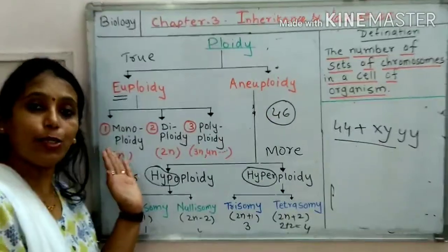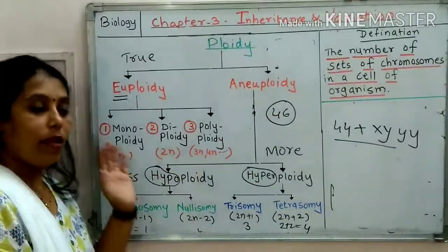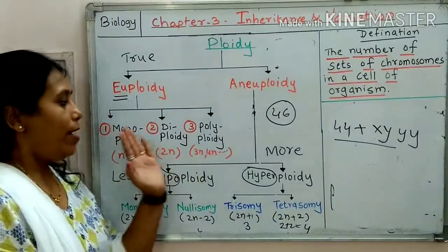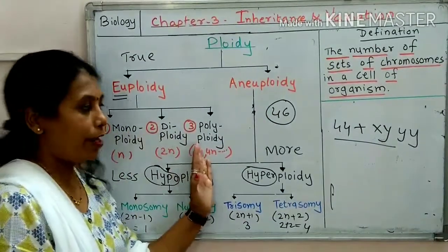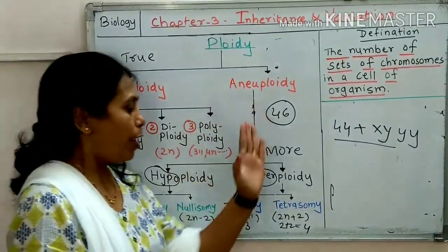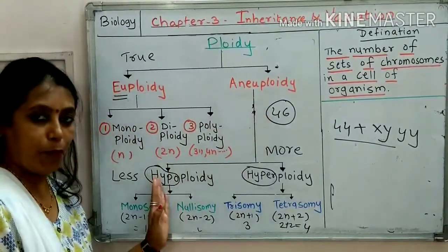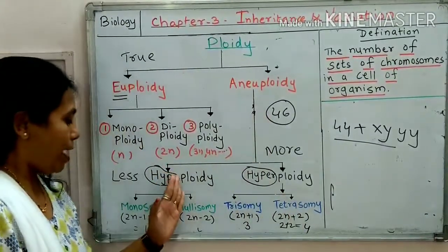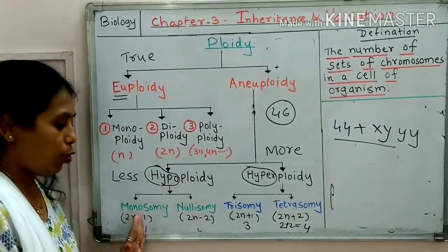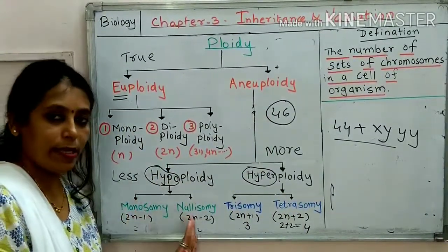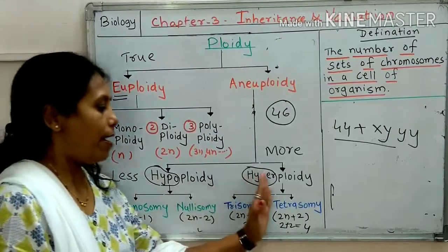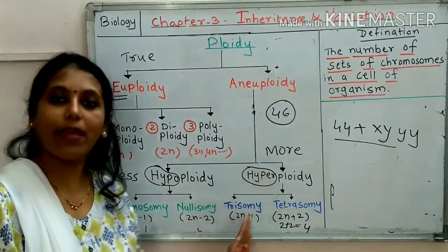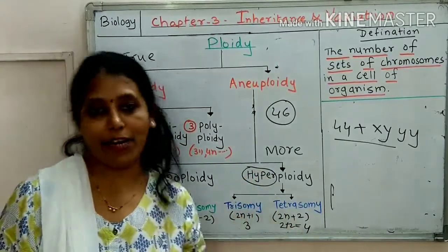Euploidy divides into 3 parts: monoploidy, diploidy, and polyploidy. Aneuploidy divides into hypoploidy and hyperploidy. Hypoploidy includes monosomy and nullisomy. And hyperploidy includes trisomy and tetrasomy.